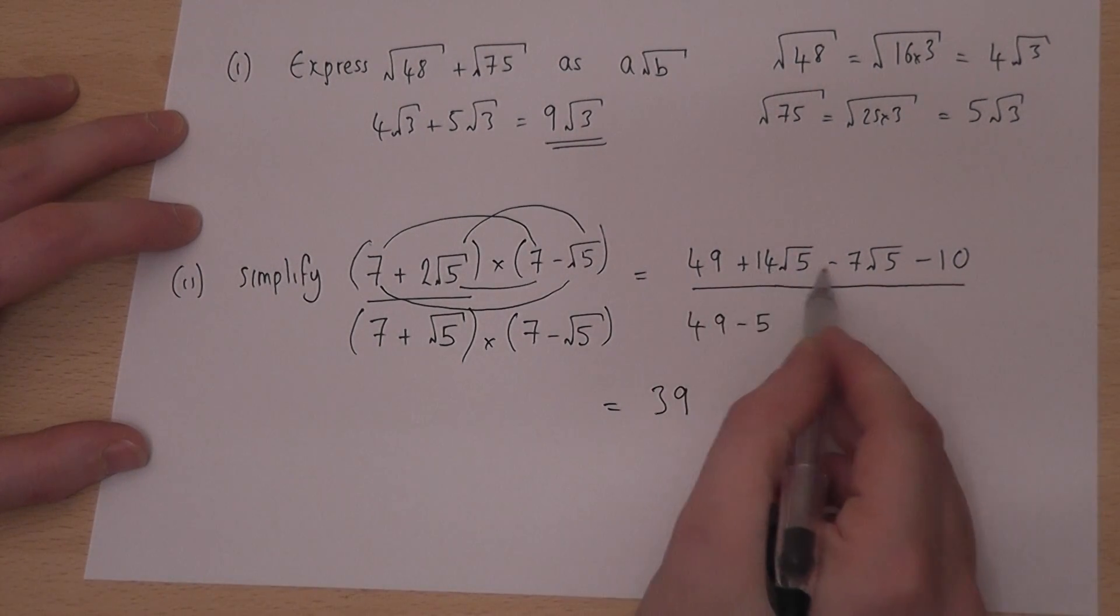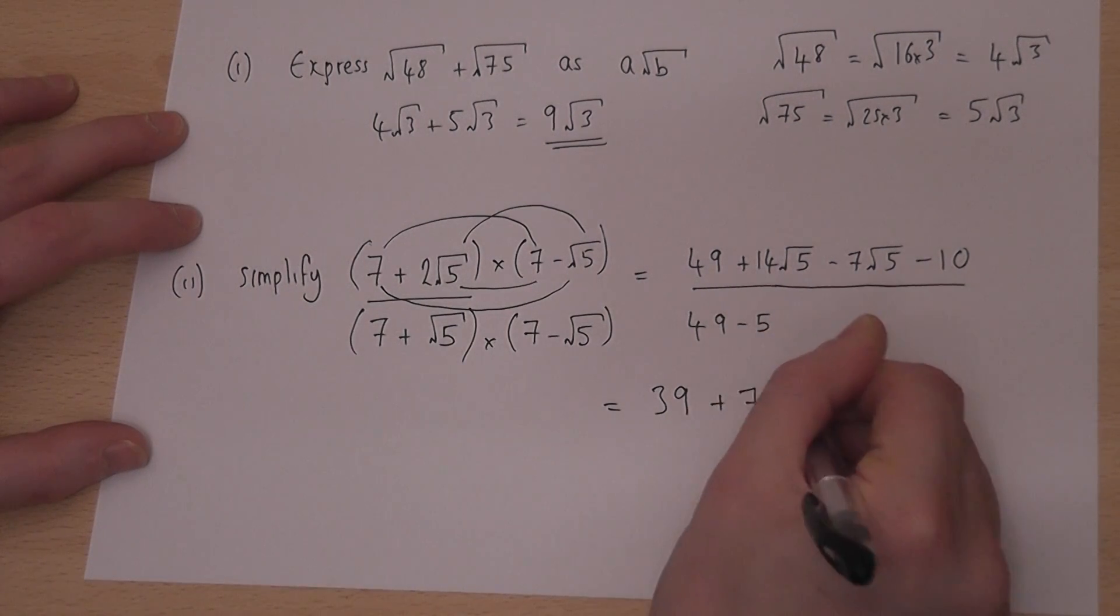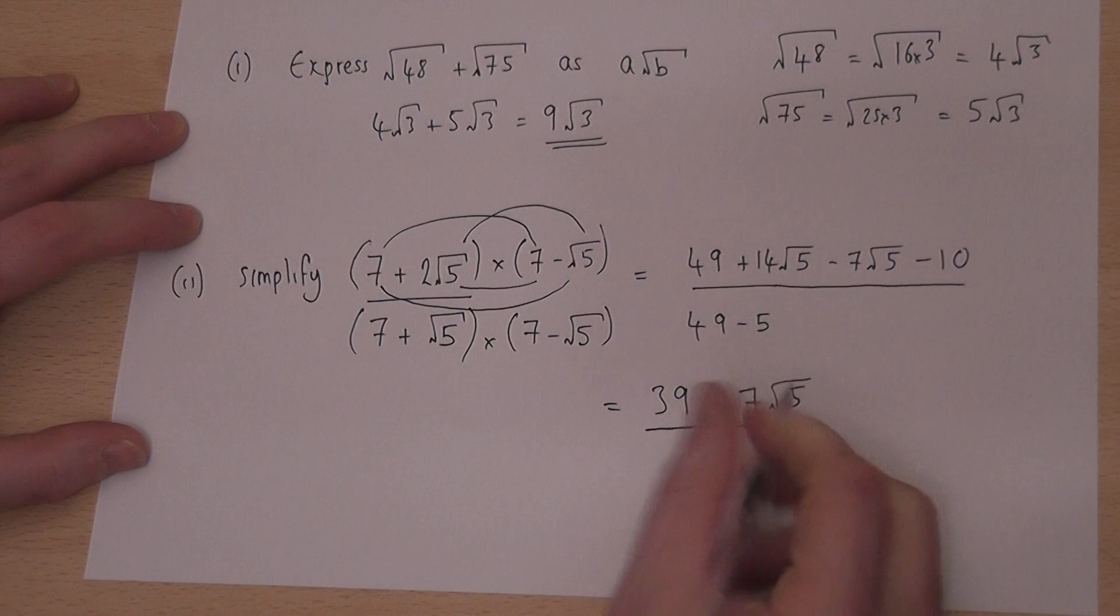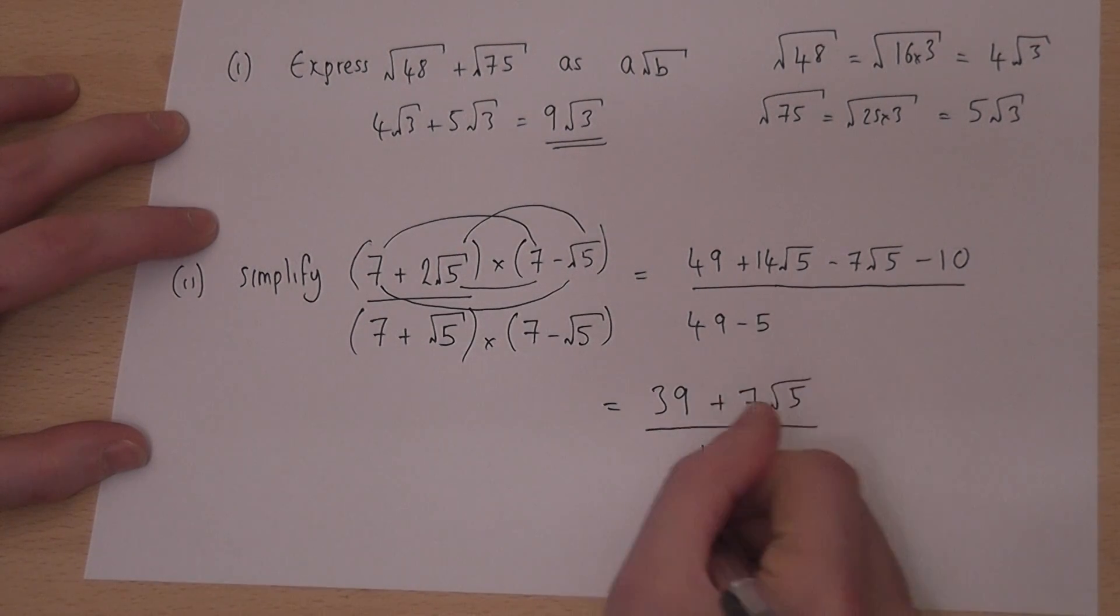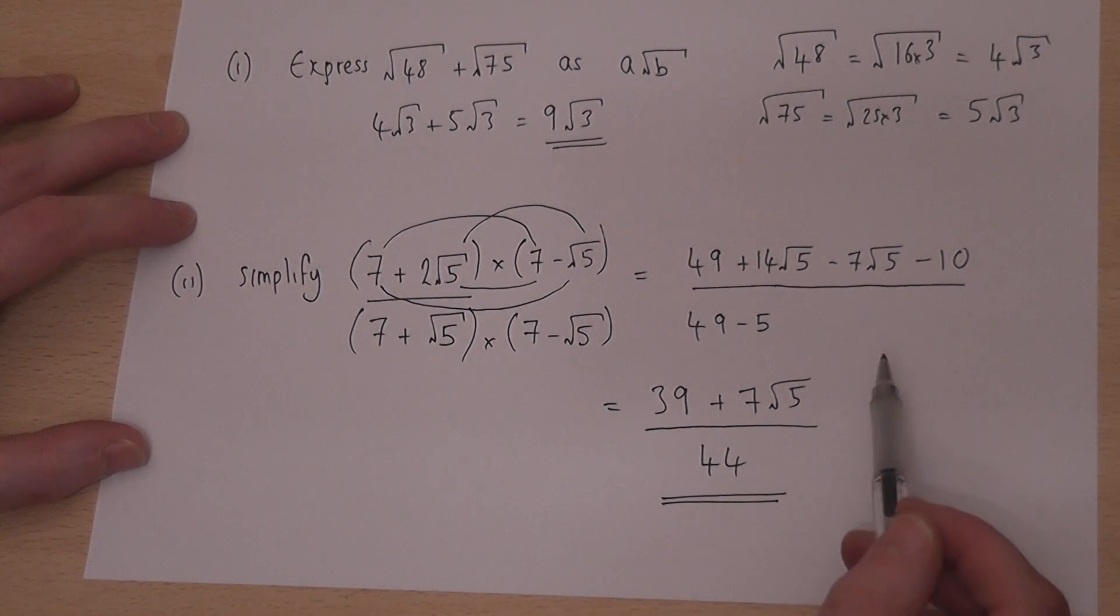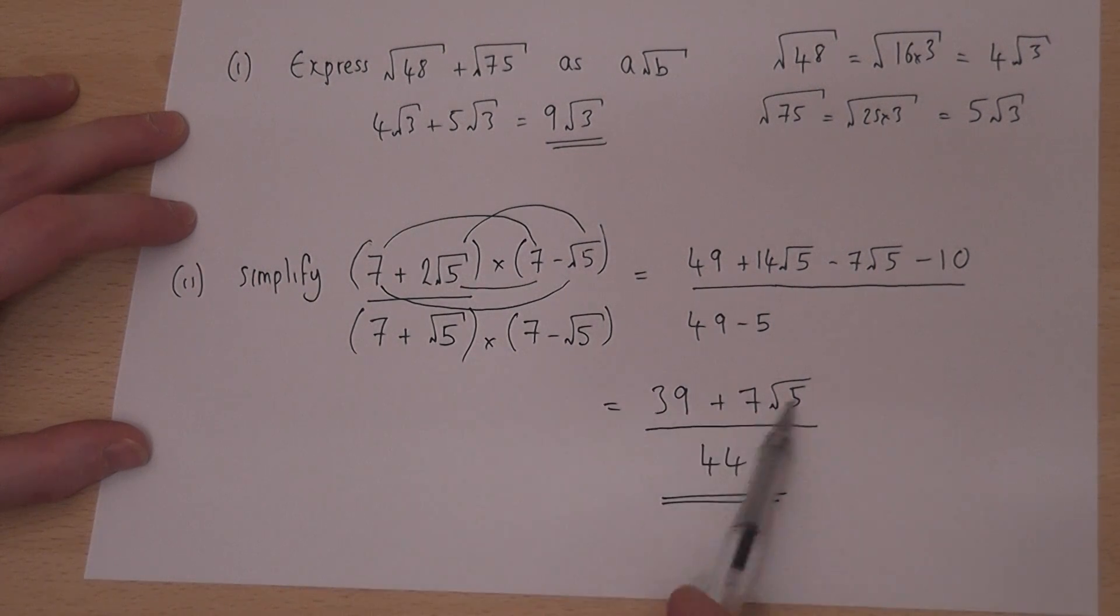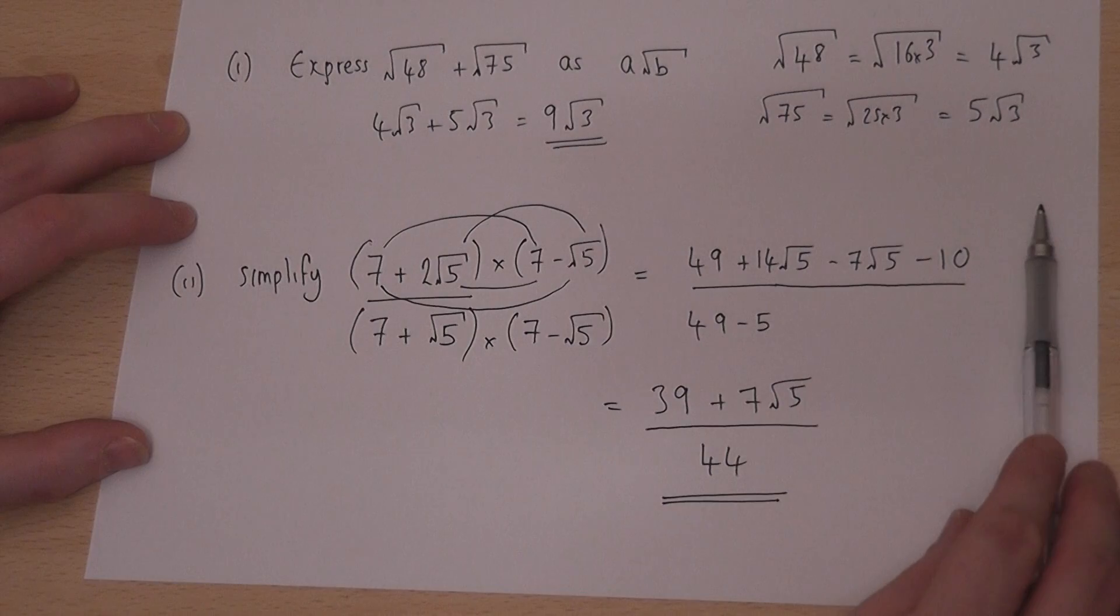So I'll extend that fraction right across. So the answer becomes 49 take away 10 is 39, plus 14 root 5 take away 7 root 5 is 7 root 5, and 49 take away 5 is 44. So there we go. The fraction has been simplified. In other words, the surd has gone from the bottom of the fraction to just being in the top of the fraction.